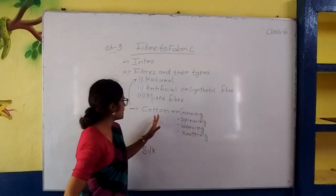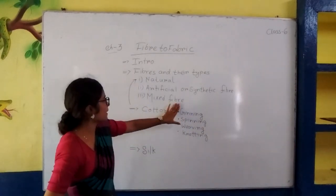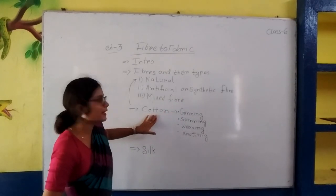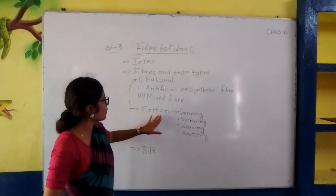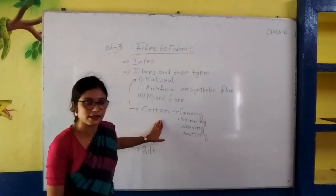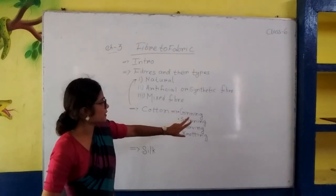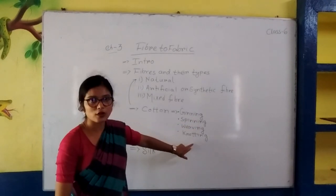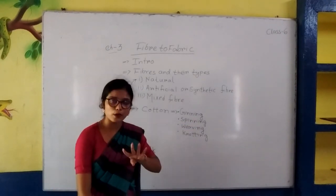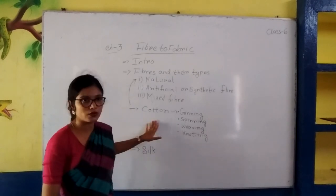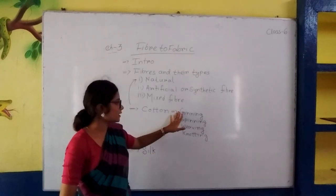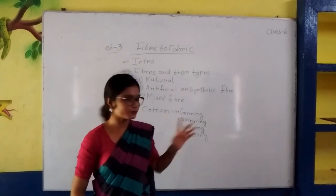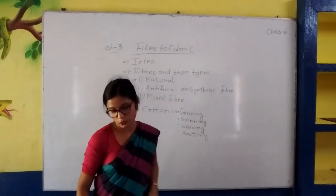The processing to collect cotton — how do we collect cotton from the seed? There are four processes: ginning, spinning, weaving, and knitting. These are the four processes to collect cotton from the seed. You can read about these processes in detail in your book.